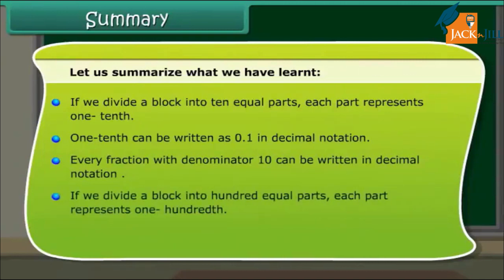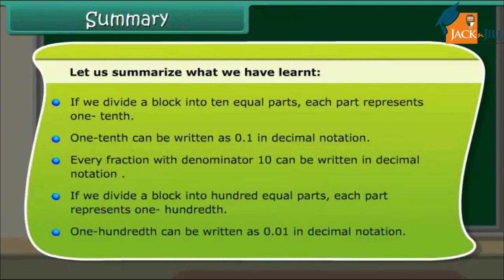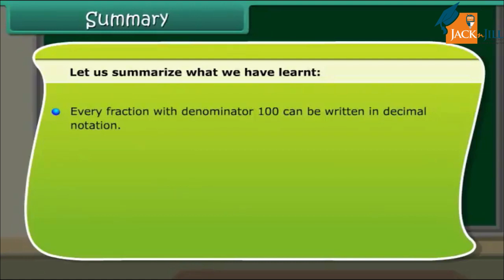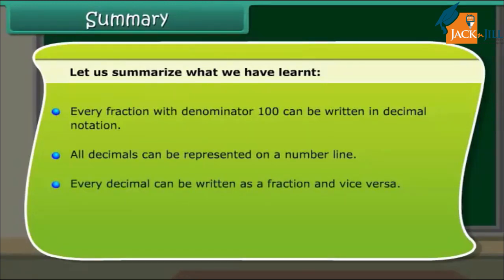If we divide a block into 100 equal parts, each part represents 1/100. 1 hundredth can be written as 0.01 in decimal notation. Every fraction with denominator 100 can be written in decimal notation. All decimals can be represented on a number line. Every decimal can be written as a fraction and vice versa. Any two decimals can be compared among themselves.